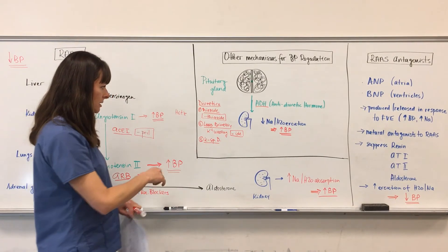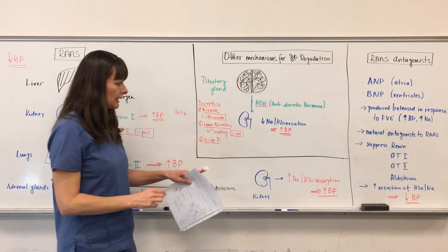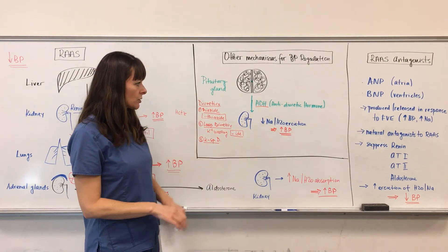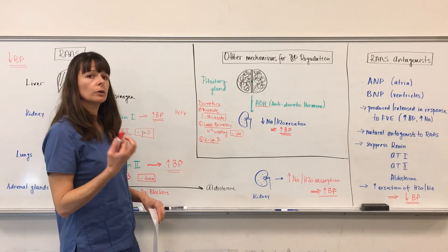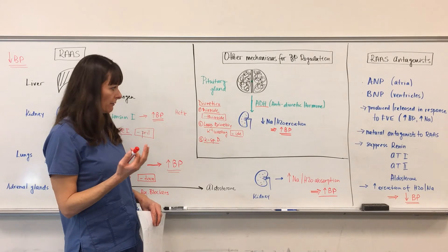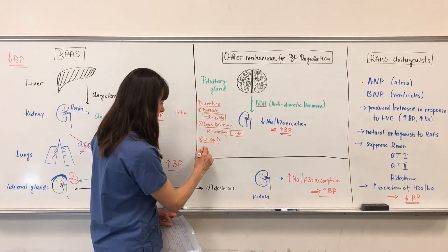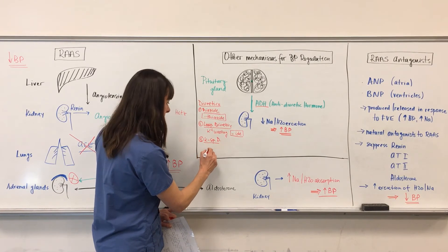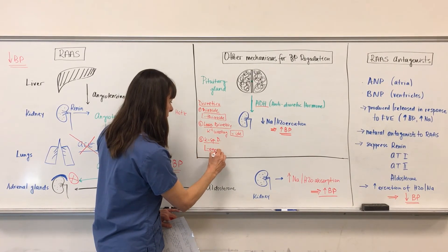And then we have the potassium sparing diuretics, which basically also work on the kidney again to help excrete more sodium and water, but they hold on to more potassium. Therefore, we have to also watch what's happening with our potassium. This will be something like aldosterone or spironolactone, and they will end in -one.